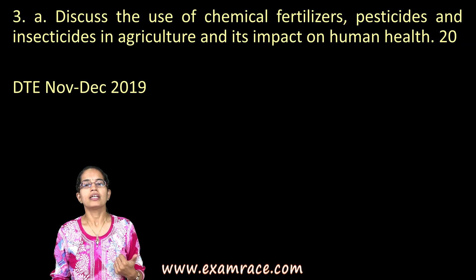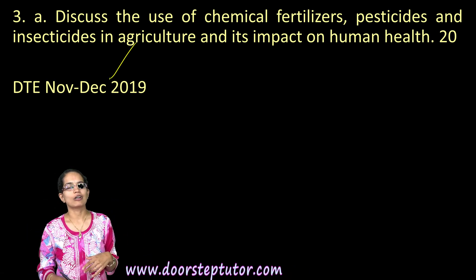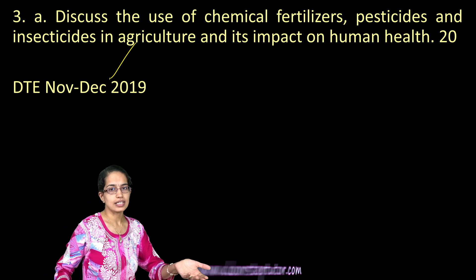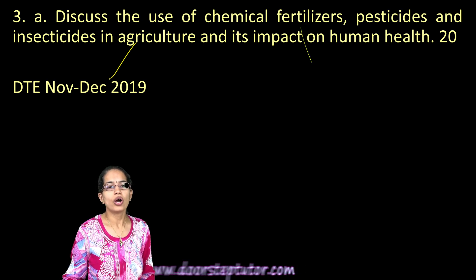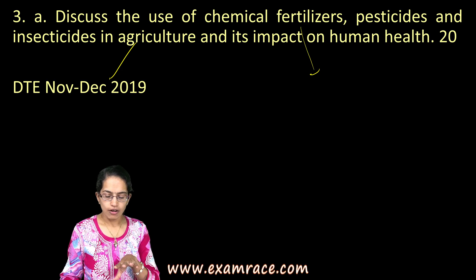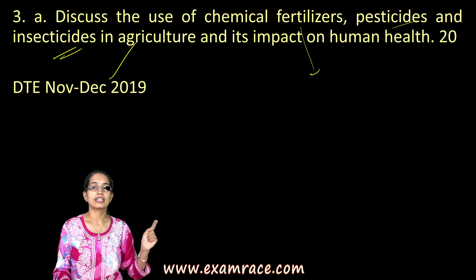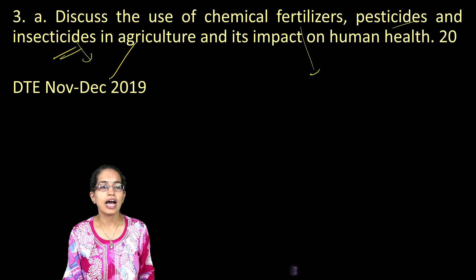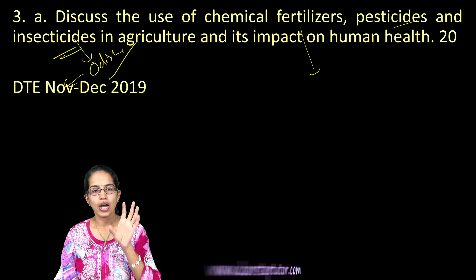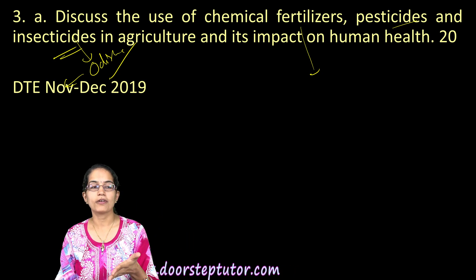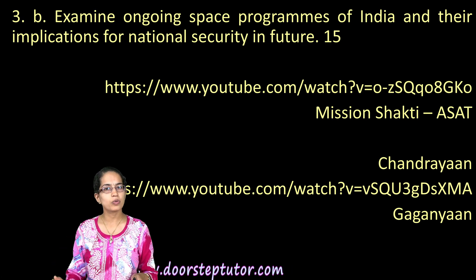The next question covers the use of chemical fertilizers, pesticides, and insecticides in agriculture and their human impact — covered in Down to Earth November and December editions. Higher use of antibiotics like streptomycin and tetracycline in agricultural crops has been noted. We are moving toward organic fertilizers under the Paramparagat Krishi Vikas Yojana scheme. Pesticides and insecticides used beyond permissible limits have resulted in higher incidences of cancer in regions like Odisha. Cover the fortnightly Down to Earth editions for case studies.